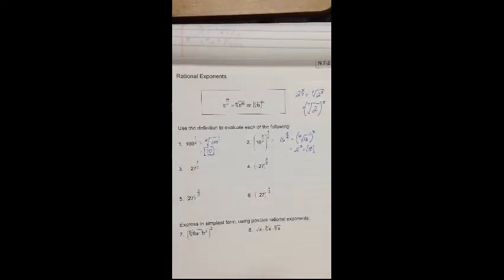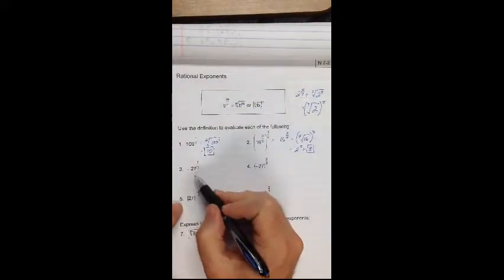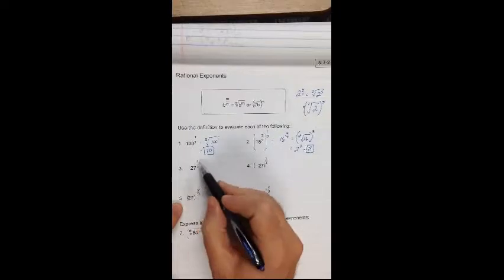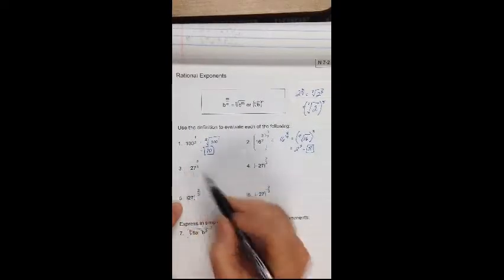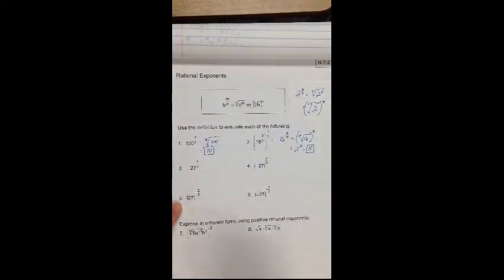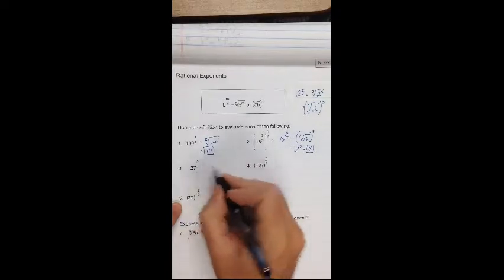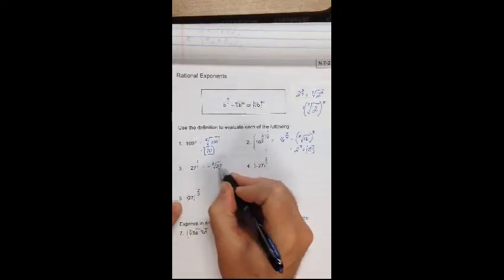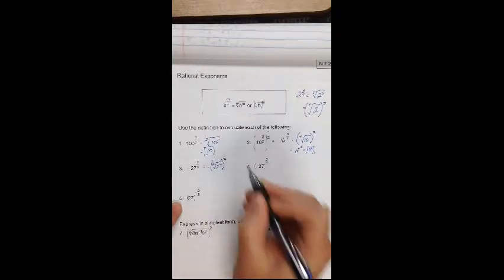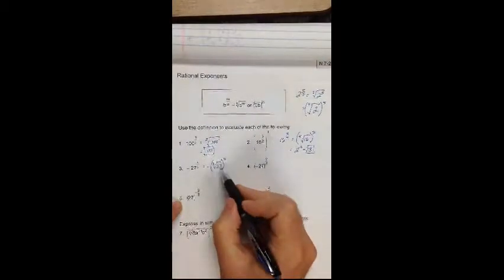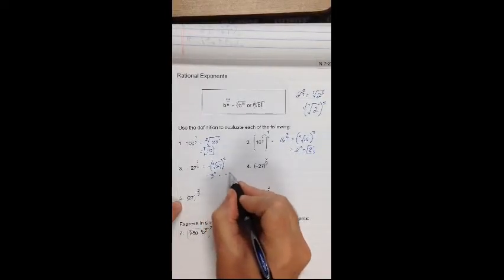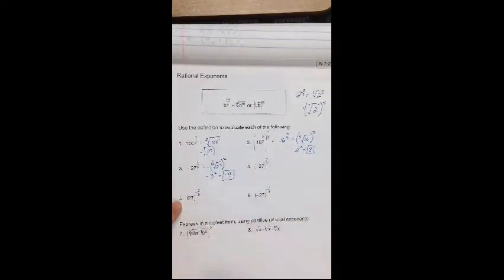Negative 27 to the 2 thirds power. Since there are no parentheses on this negative 27, this is going to be 27 to the 2 thirds, and then at the end I'll take the negative of it. So I say the 3rd root of 27 and then square that. The 3rd root of 27 is 3, and negative 3 squared is negative 9.